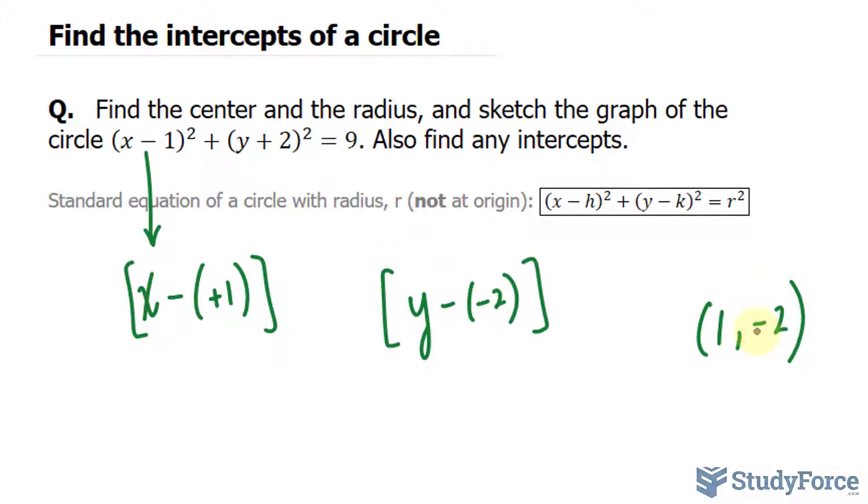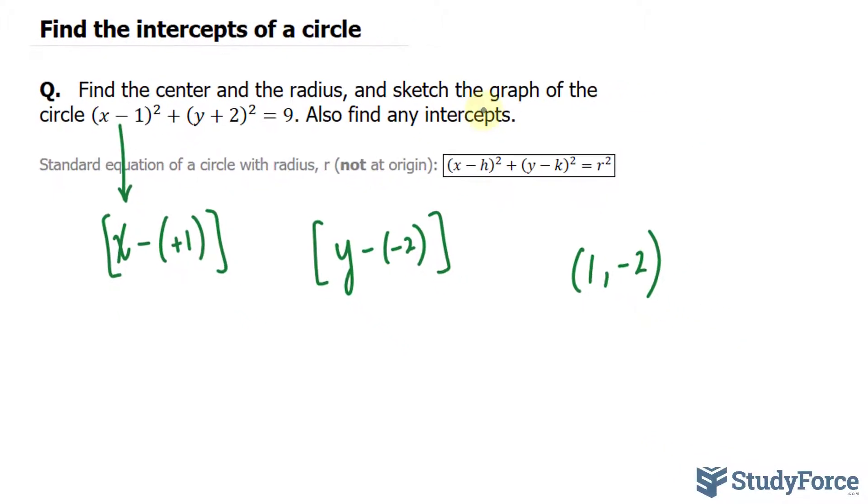Essentially, you just take the opposite sign of what's written there. So this was minus 1, it became positive 1. This was plus 2, it became minus 2. In addition, this part, the constant, gives us an idea of what the radius is. So we have 9 equals r squared. If we square root both sides, we end up with 3 equals r. So we know that our radius will be 3. So our radius is 3 units.